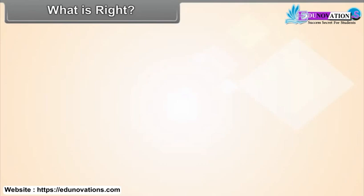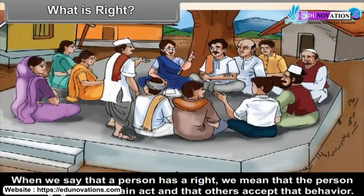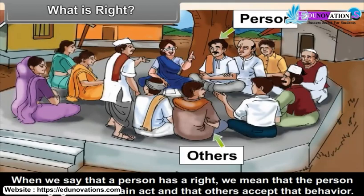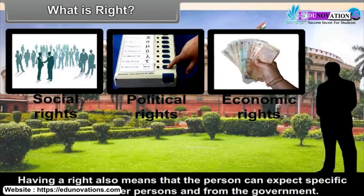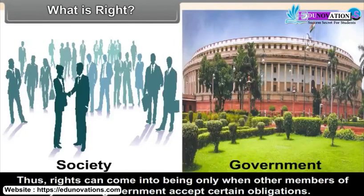What is a right? When we say that a person has a right, we mean that the person can engage in a certain act and that others accept that behavior. Having a right also means that the person can expect specific behavior from other persons and from the government. Thus, rights can come into being only when other members of society and the government accept certain obligations.